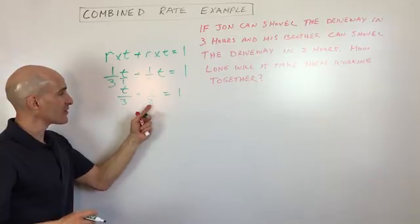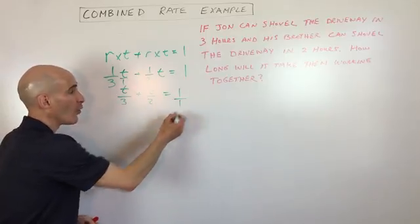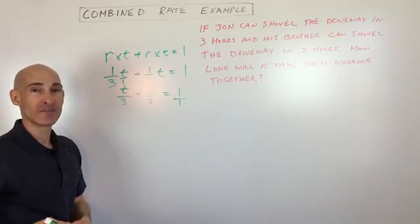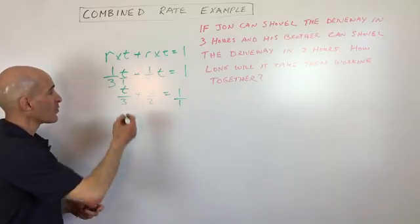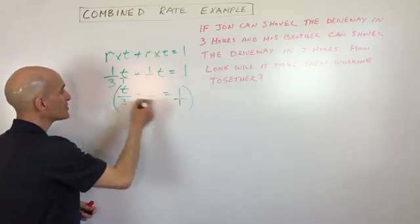So what's the smallest thing that 3, 2, and 1 all go into? Well, that's 6, right? So what we're going to do is we're going to multiply the entire equation by 6.